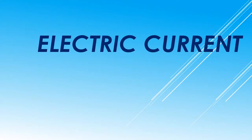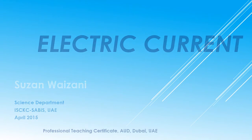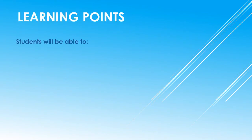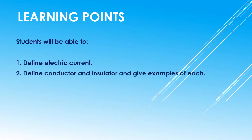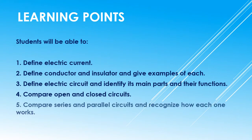Hi, my name is Susan. I'll present today the lesson of electric current for fourth graders. The learning points of my lesson: one, define electric current; two, define conductor and insulator and give examples of each; three, define what an electric circuit is and identify its main parts and their functions; four, compare open and closed circuits; five, compare series and parallel circuits and recognize how each one works.